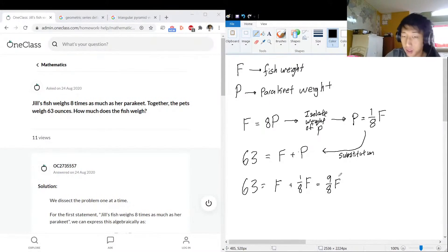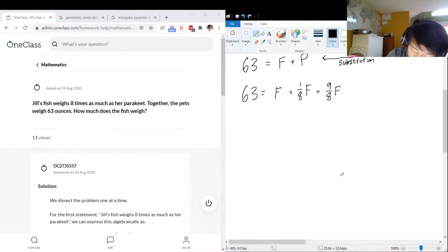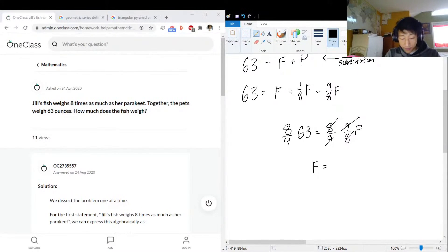We can multiply both sides by 8 over 9, so 8 over 9 times 63 is equal to 8 over 9 times 9 over 8 of the fish. Those neutralize, and those neutralize. So we know that the weight of the fish is 8 times 63 divided by 9, so we got 56 ounces of fish.